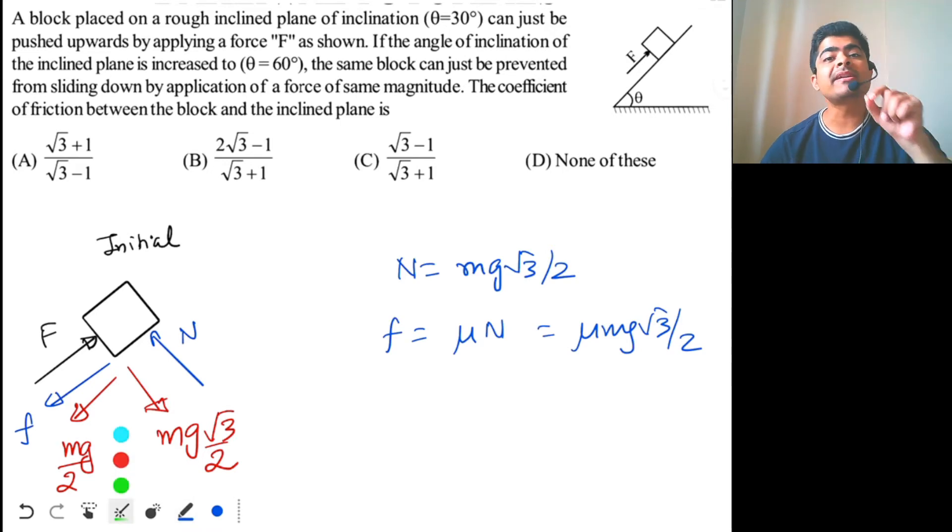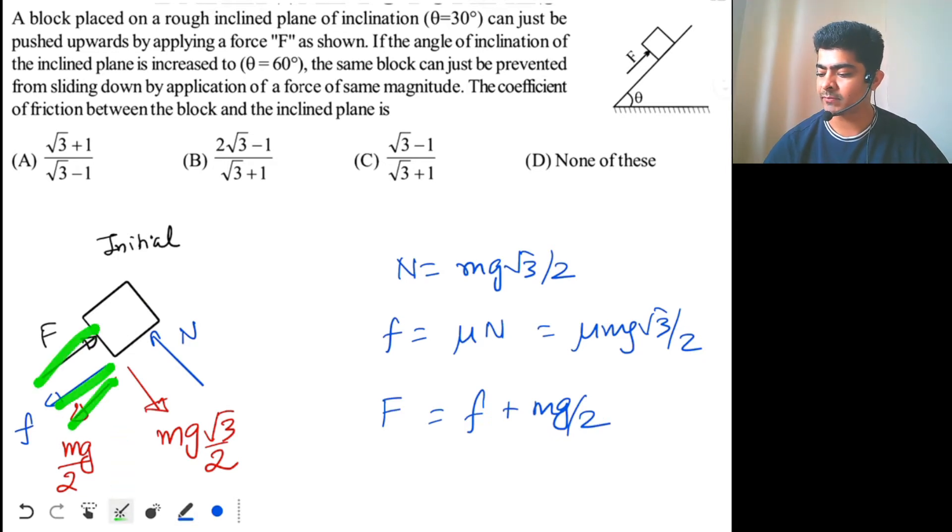Now, just moving means acceleration is zero, so friction should be equal to F plus mg by 2. Sorry, F should be equal to friction plus mg by 2.